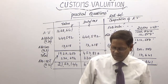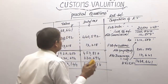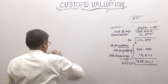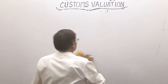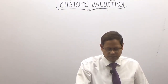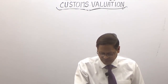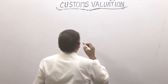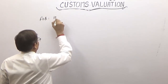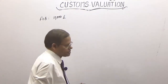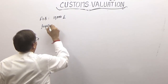Let us do one more question. Always put a proper heading: computation of assessable value, computation of duties. FOB value of the machine is £10,000. Freight is £3,000 by air.